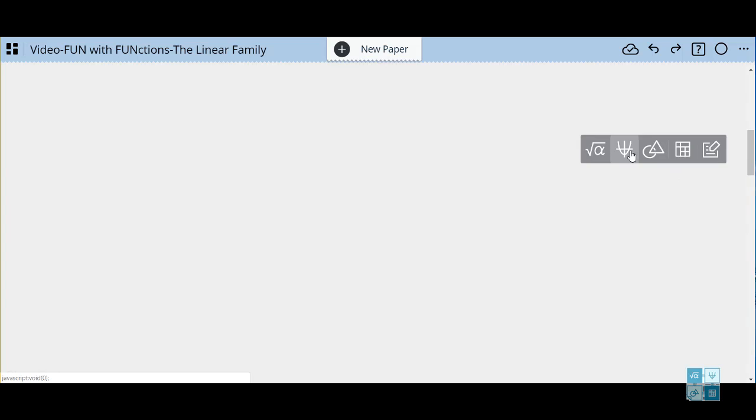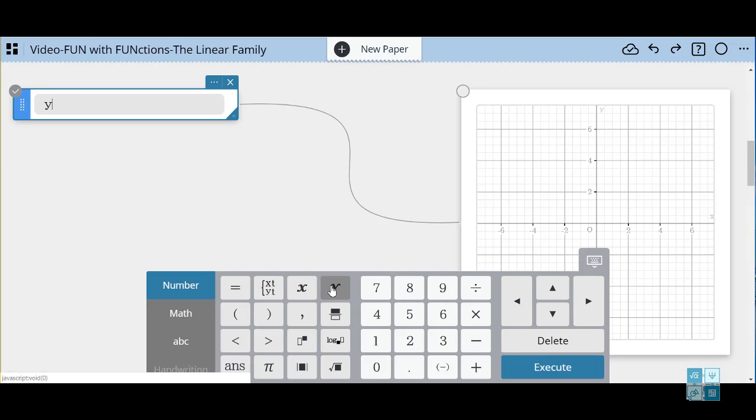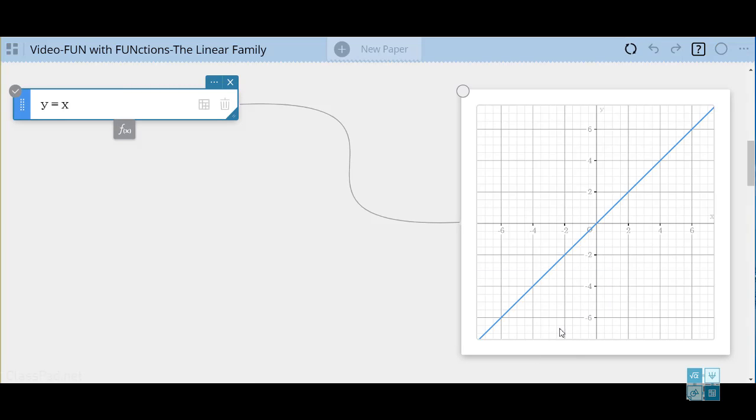Let's open up a graph sticky and enter our parent function, Y equals X. As you can see, it appears in blue on our coordinate plane. It has a y-intercept of 0, a slope of 1, the coefficient of X.